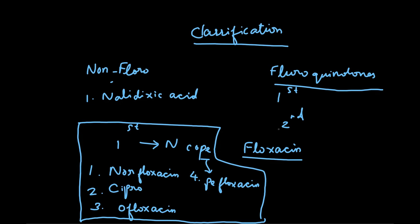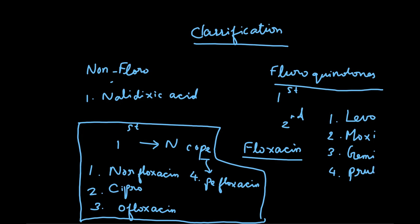Next, there is a second generation of Fluoroquinolones. These drugs are: first, Levofloxacin; second, Moxifloxacin; third, Gemifloxacin; fourth, Prulifloxacin; fifth, Lomefloxacin; and sixth, Sparfloxacin. So except the N-COP drugs, all others are second generation Fluoroquinolones.